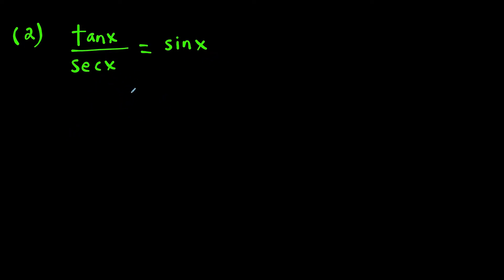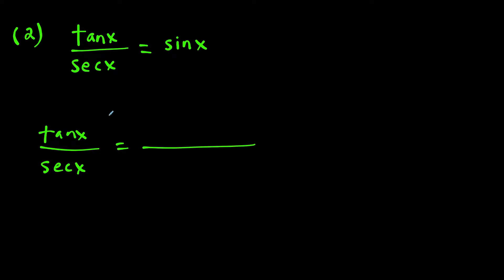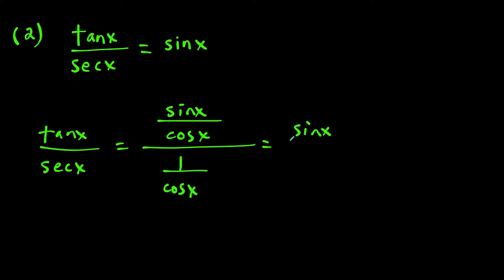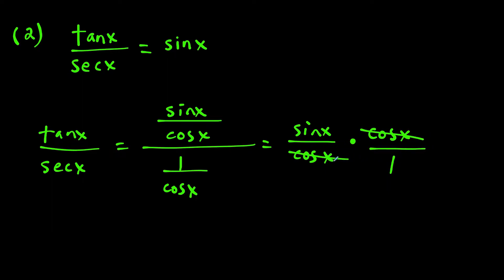We're going to start with the left-hand side because it's more complicated and show it equals the simple right-hand side. Starting with tan x over secant x — tangent x is the same as sine x over cosine x, and secant x is one over cosine x. When dividing fractions, we keep the top fraction, change to multiplication, and flip the bottom fraction. The cosine factors cancel, leaving sine x divided by one, which is just sine x. This verifies the second identity.